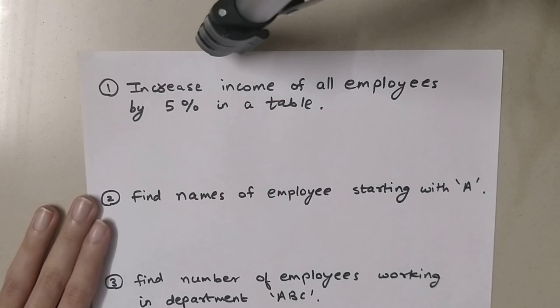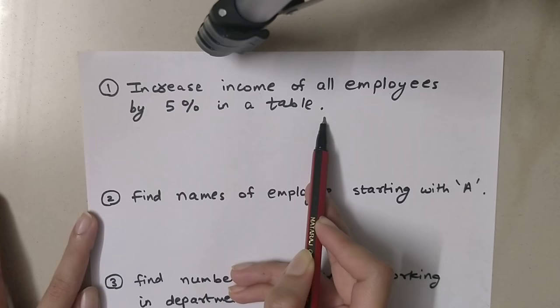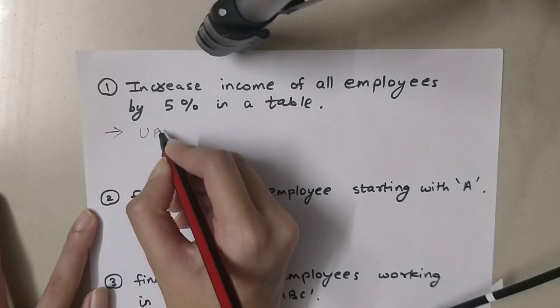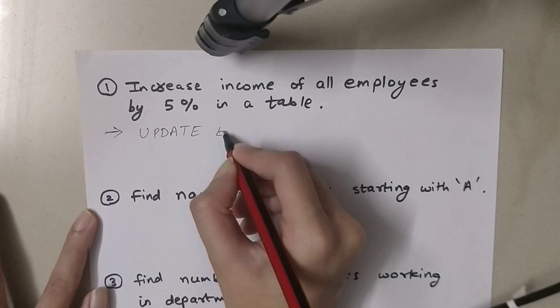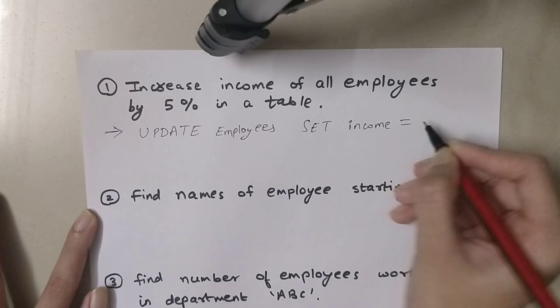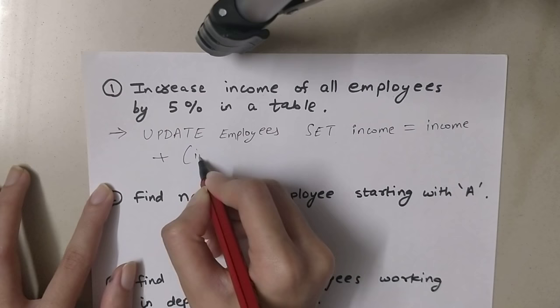In this video we are going to solve five SQL queries. The first query is: how will we increase the income of all employees by 5% in a table? Whenever we want to change any attribute in a table we use an UPDATE query. We write UPDATE employees SET income = income + income * 5%.